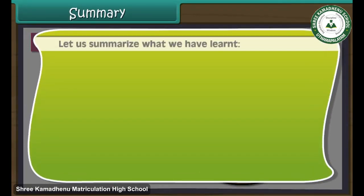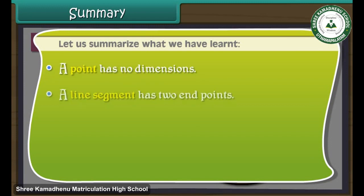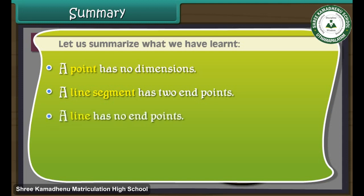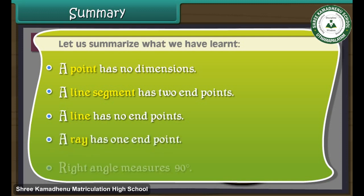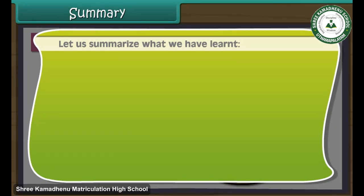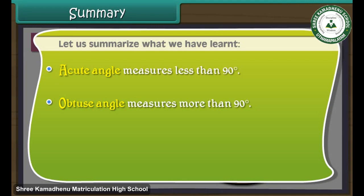Let us summarise what we have learnt. A point has no dimensions. A line segment has two end points. A line has no end points. A right angle measures 90 degrees. An acute angle measures less than 90 degrees. An obtuse angle measures more than 90 degrees.